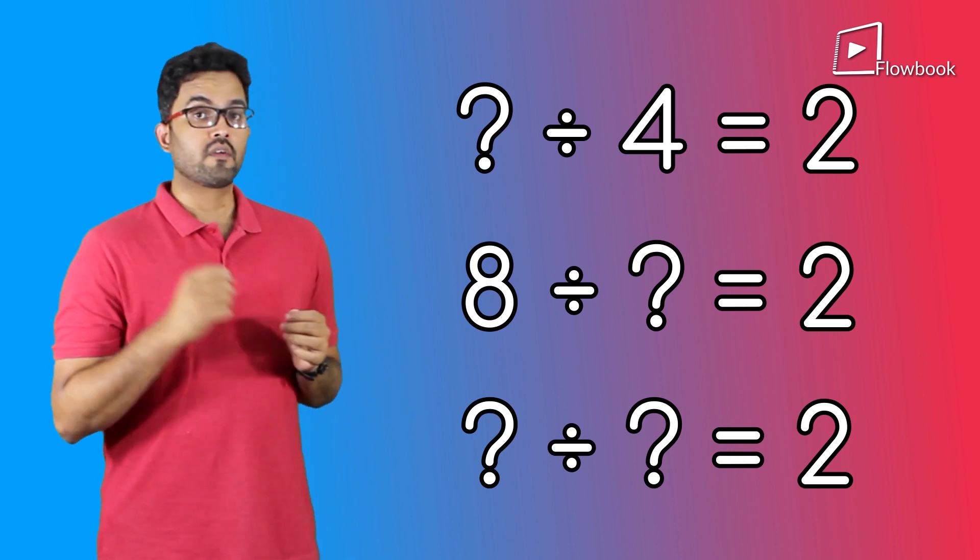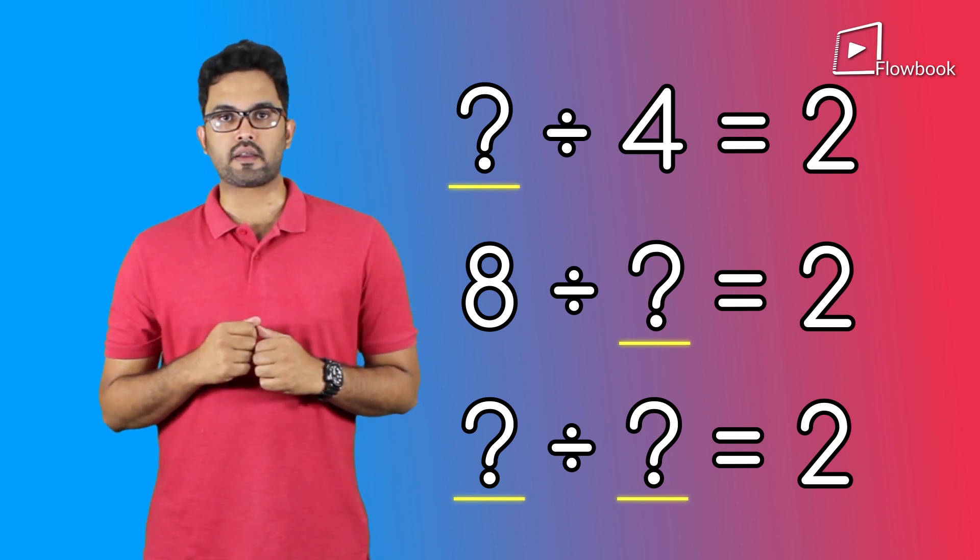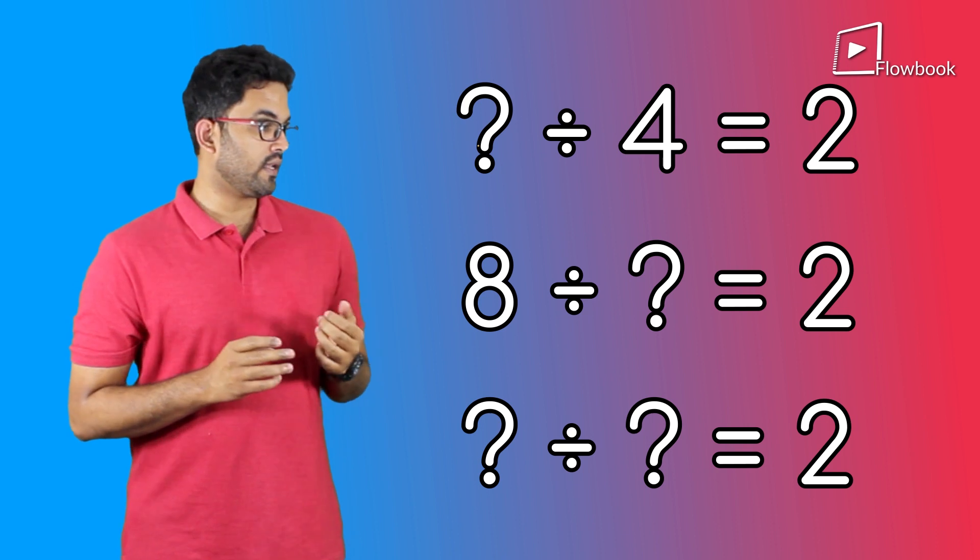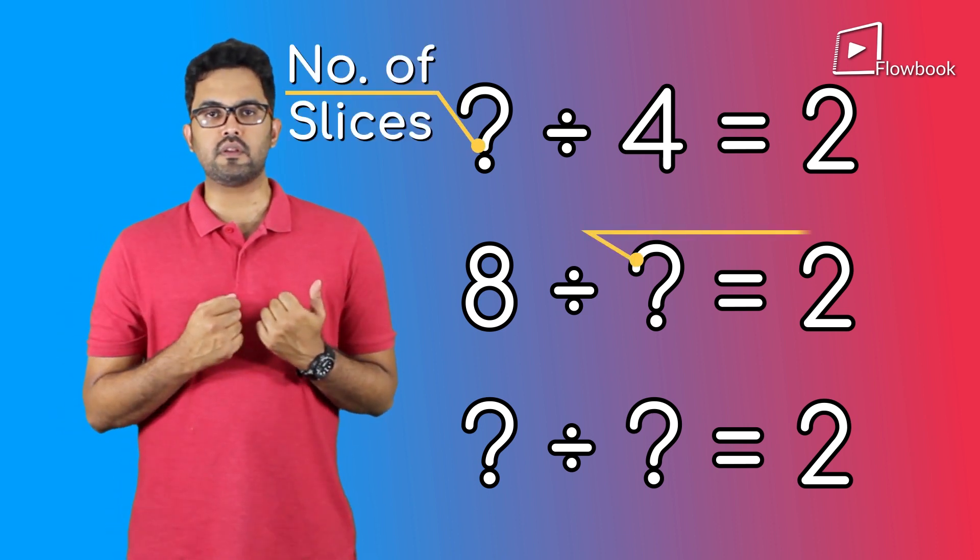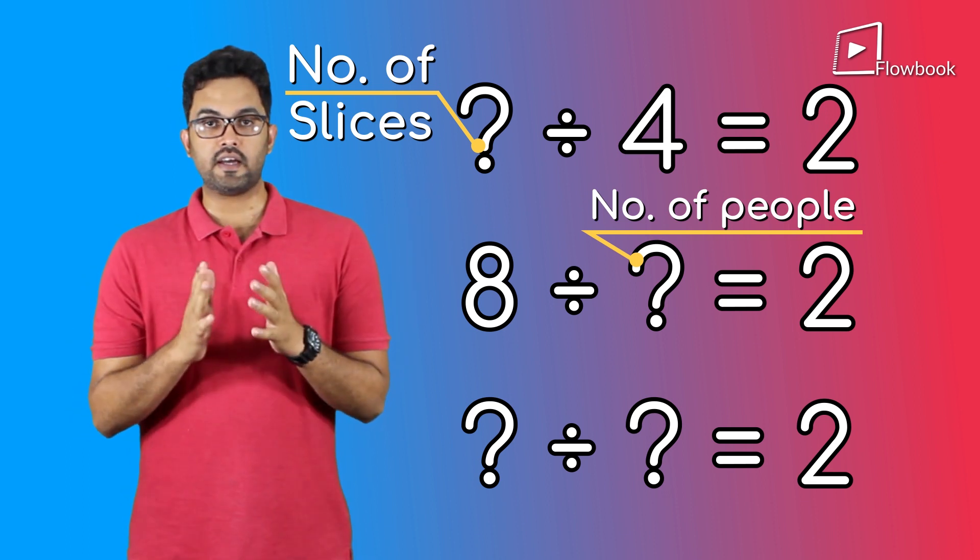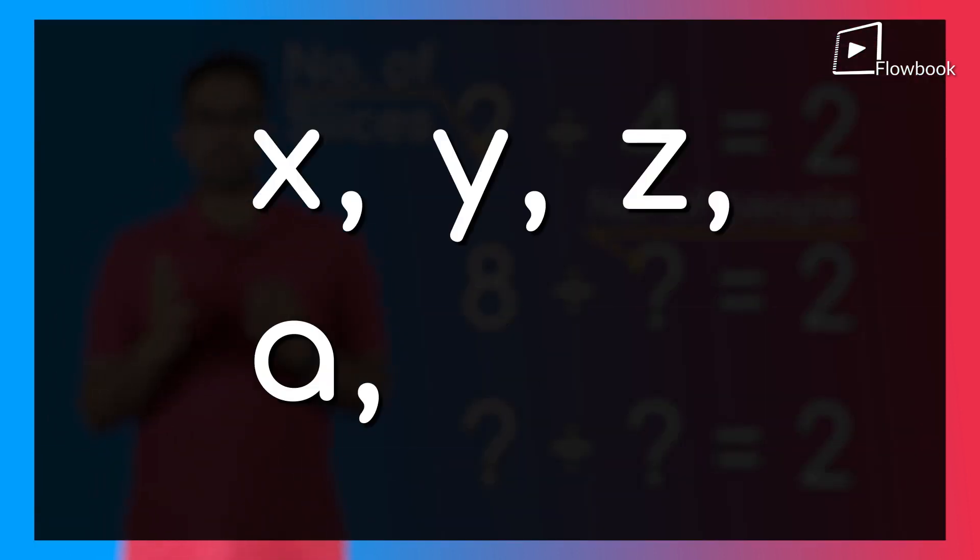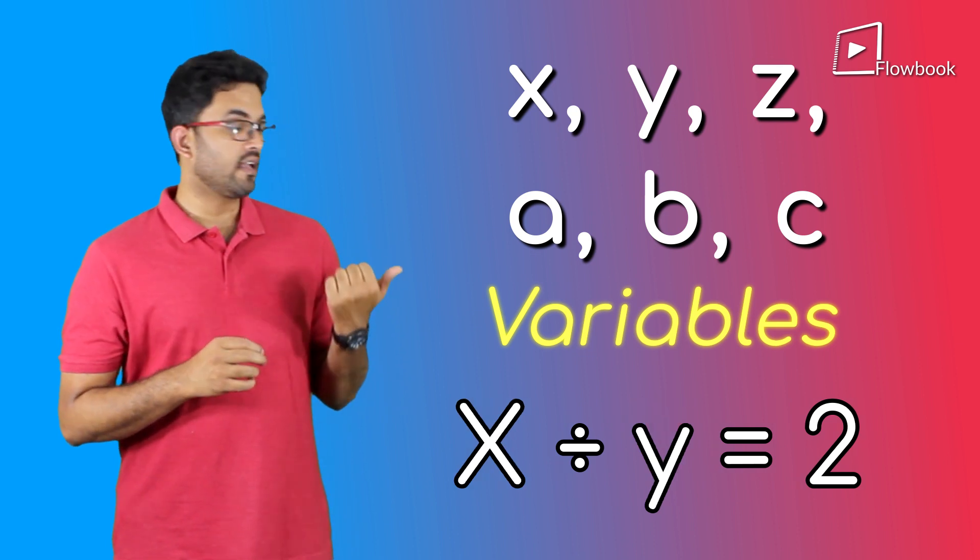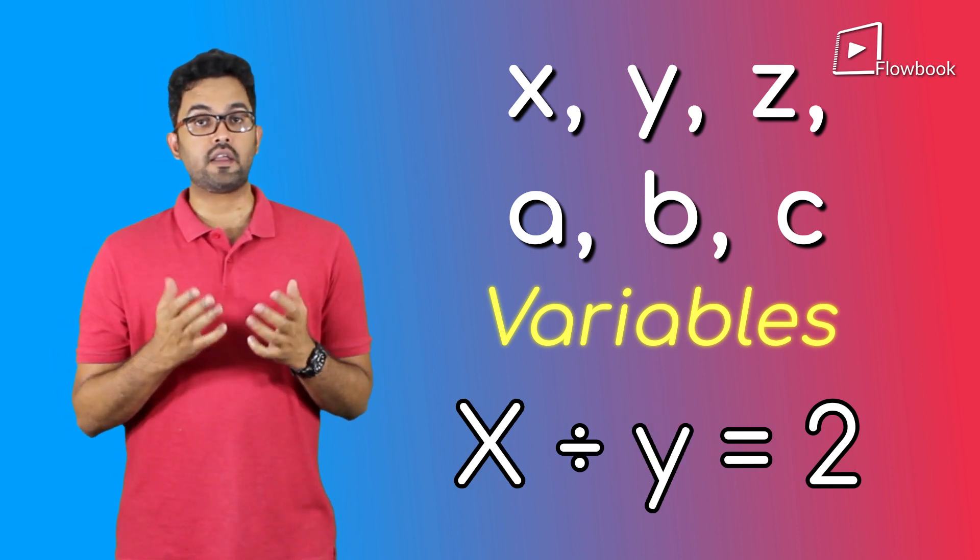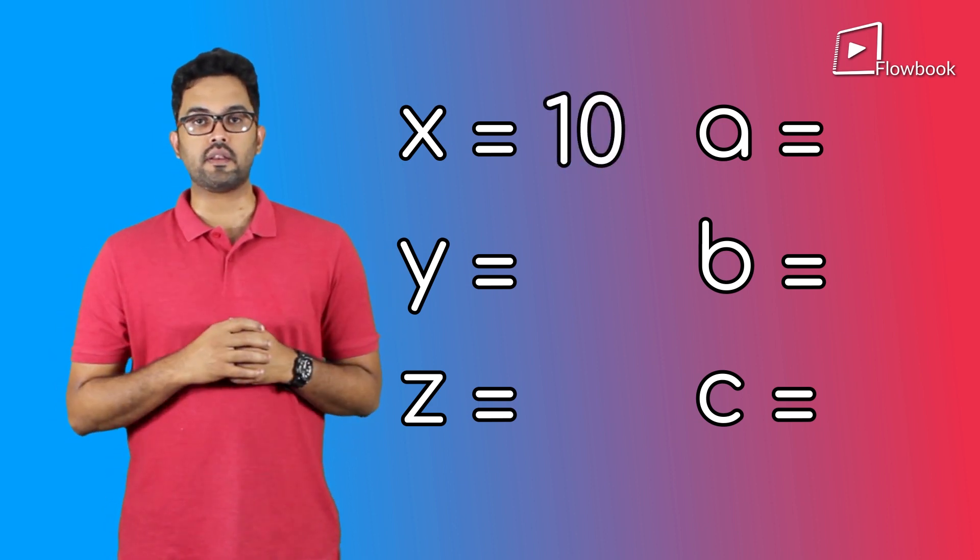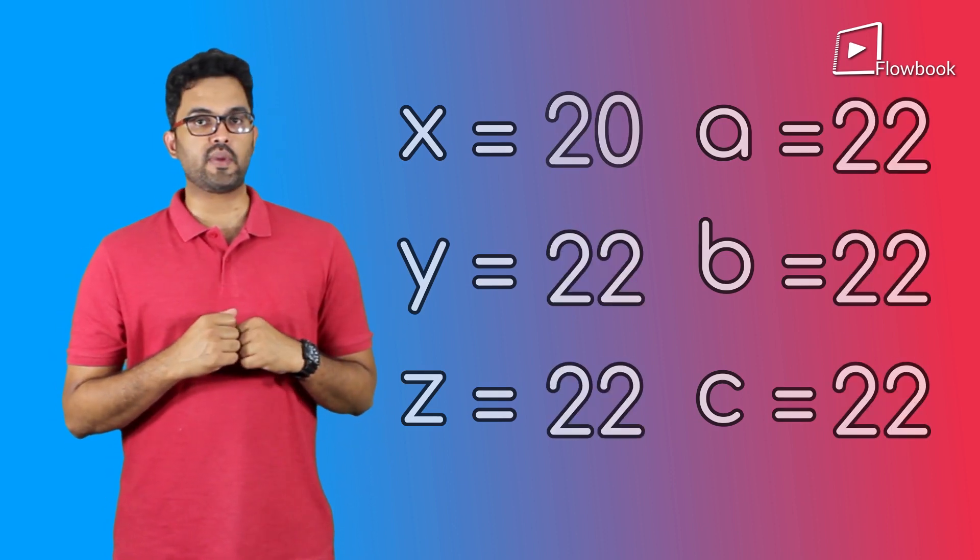Now here, whenever I don't know a number, I can replace it with a question mark. But these question marks also represent different things. One is for the number of slices and the other is for number of people. So I should be able to differentiate between them as well. And thus, we use letters like X, Y, Z, A, B, C depending on the number of question marks. These are called variables because each of these can change, right? Depending on the number of slices I have, X can be 2 or 4 or 10 and so on. Same goes for all the other variables.